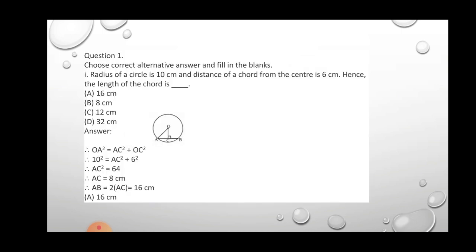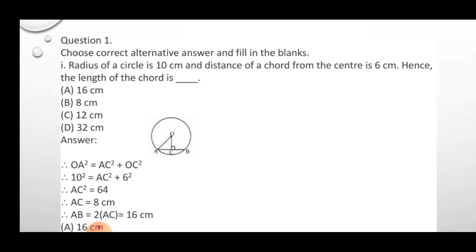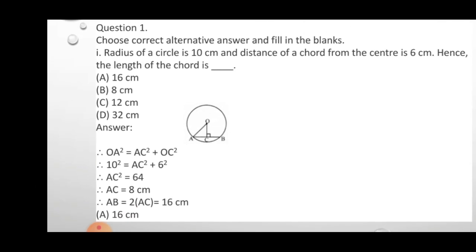Next is the problem set, starting with MCQs. Question 1: the radius of a circle is 10 cm and the distance of a chord from the center is 6 cm — find the length of the chord. For MCQs, write only the answer in your answer sheet; no diagram or full explanation is needed.